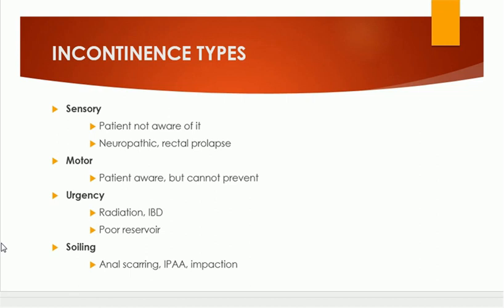With motor incontinence, the patient is aware of the incontinence but cannot prevent passage of fecal matter. Urgency-associated incontinence results when there is radiation proctitis or inflammatory bowel disease, resulting in poor reservoir. Soiling occurs when there is anal scarring or fecal impaction and the patient passes mucus without control.